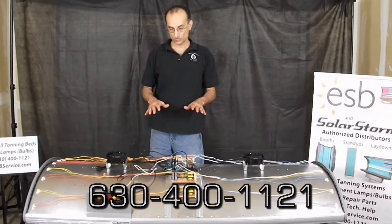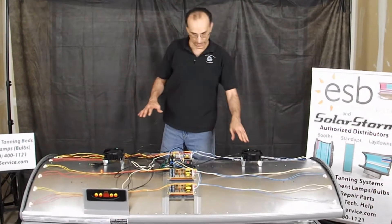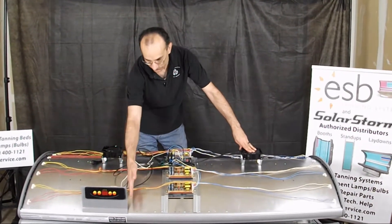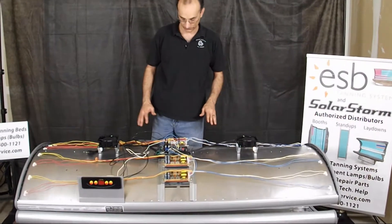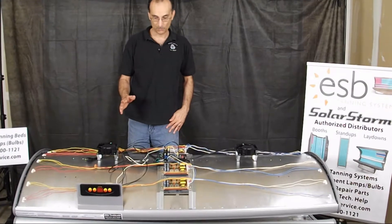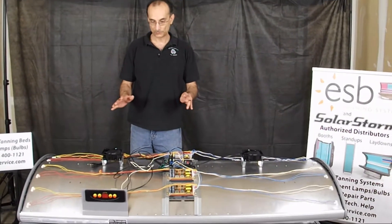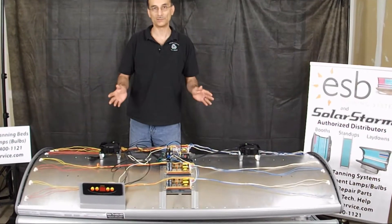Now for this demonstration we've already got the cover removed from the tanning bed here and I have the timer mounted on just a little section of the cover so we can see all the electronics here. And this is a 16 lamp, 120 volt model. Not that that matters very much when we're doing this video, I'm just talking about the basic power flow.